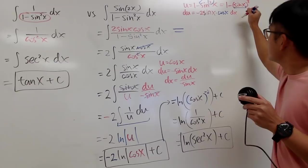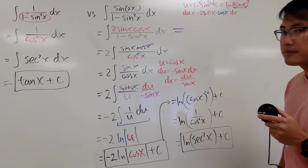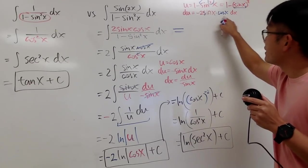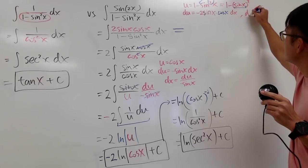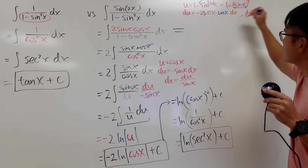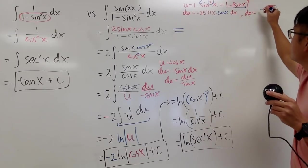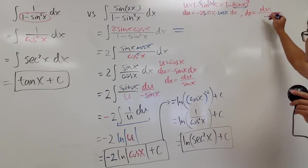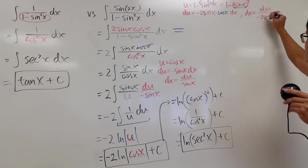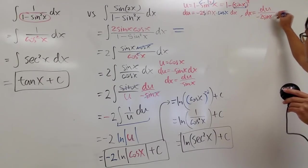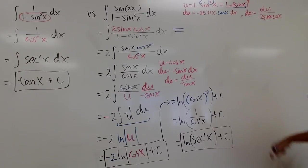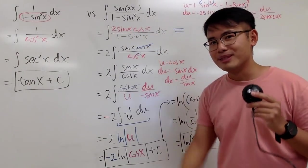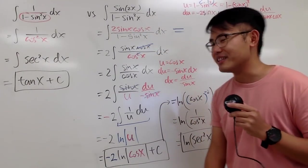And I can divide this whole thing on both sides. So dx equals du over negative 2 sine x cosine x. And this is going to help us cancel out the top — that's the beauty of this.